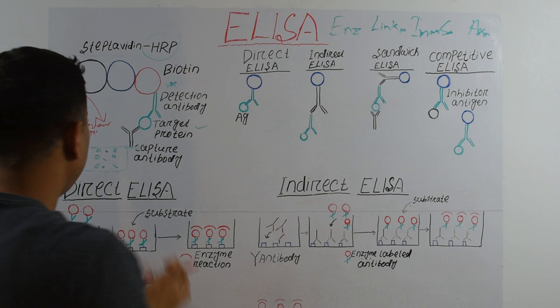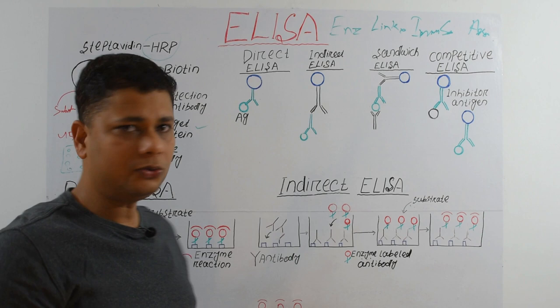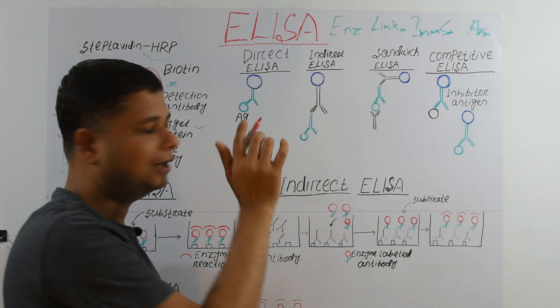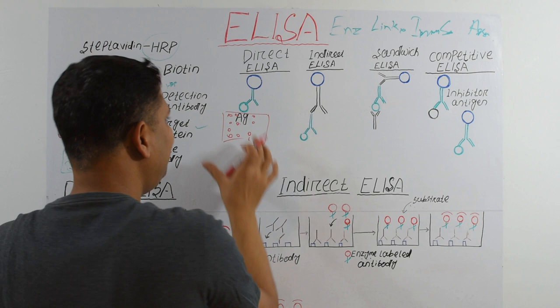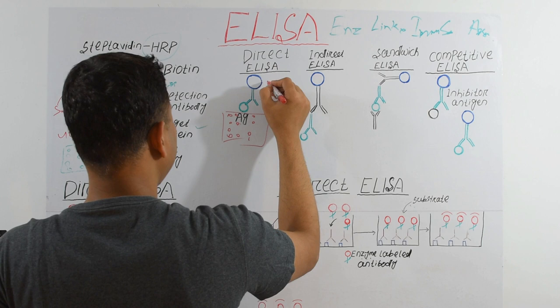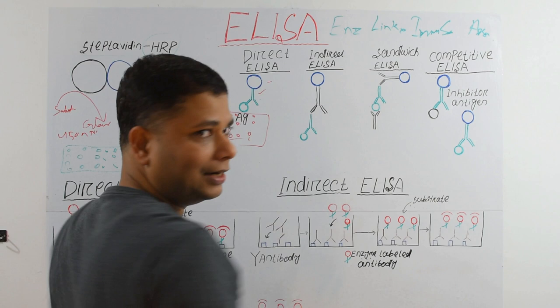Now coming to the different types of ELISA. Depending on our use, we can use different types. The first and easiest one is Direct ELISA. In Direct ELISA, we fix the antigen directly onto the multiwell plate and then add an HRP-conjugated antibody. Because the antibody is already conjugated with HRP, we call it Direct ELISA.